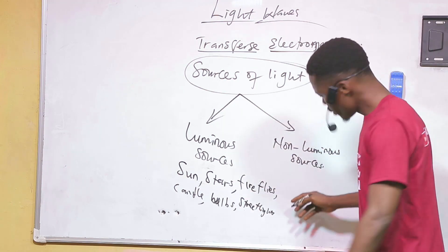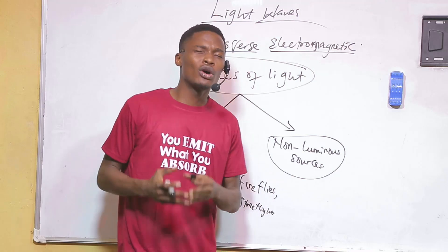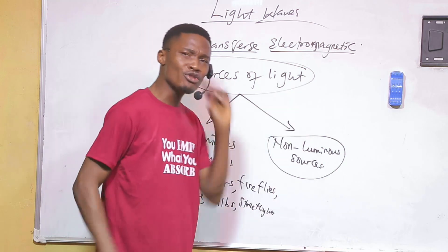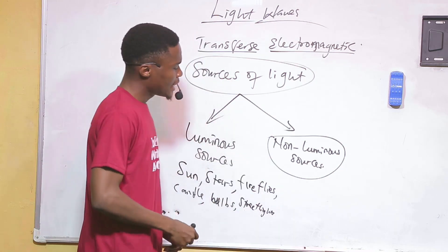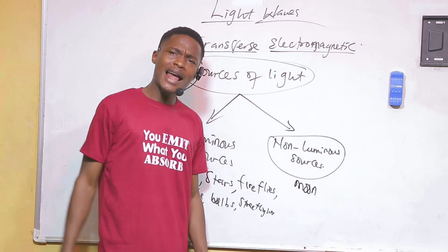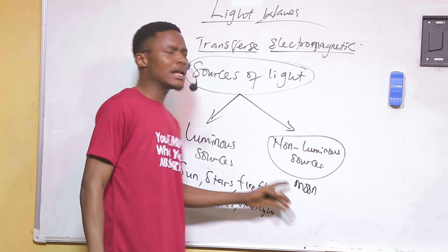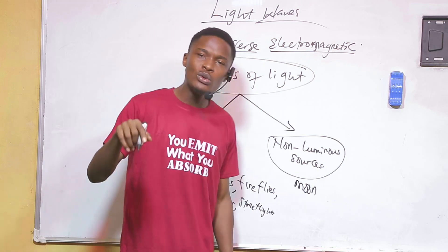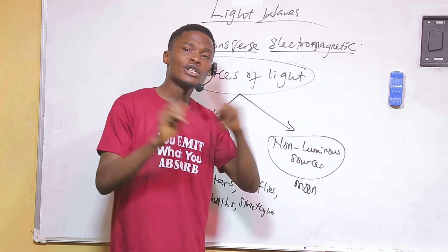Non-luminous sources are sources that do not produce their own light. Instead, they reflect light from luminous sources. An example is the moon. You might wonder — the moon shines at night, so isn't it luminous? But the light from the moon is not the moon producing light. It is the sun producing that light.